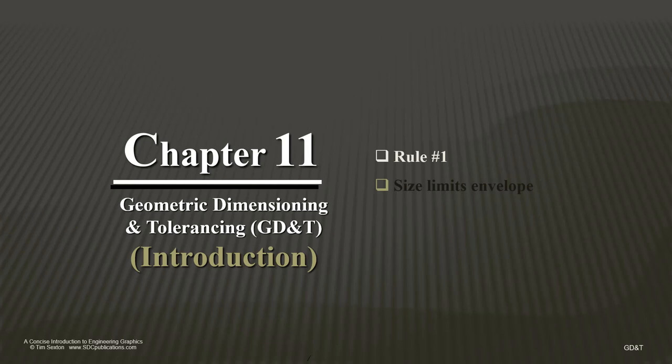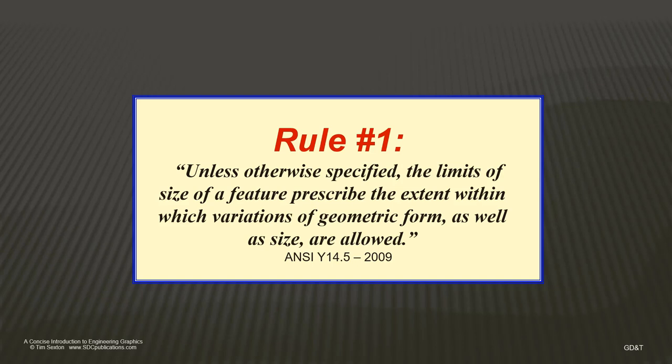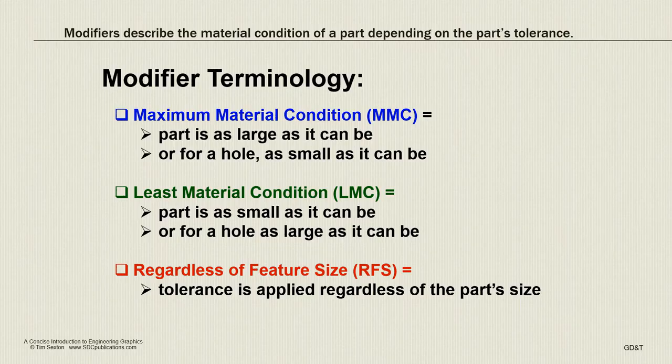Rule number one and size limits envelope go hand in hand. Rule number one says unless otherwise specified, the limits of size of a feature prescribe the extent within which variations of geometric form as well as size are allowed. So what does that mean?